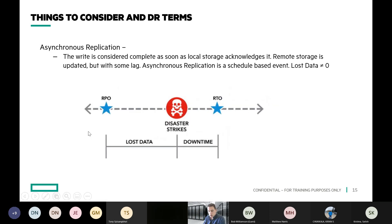Snapshots enable asynchronous replication. The time between each snapshot dictates your RPO — how much data will be lost. Depending on what mechanism you use to bring your snapshots online during a disaster, you might have something automated like Site Recovery Manager for VMware that gets everything up and running in minutes, or a manual process that could take a few days. So even if your RPO is very low — say a snapshot every 15 minutes — your RTO could be anywhere from five minutes to five days depending on the recovery mechanism.